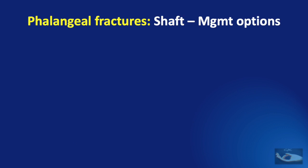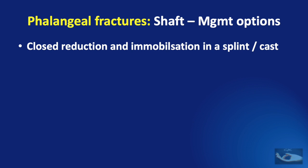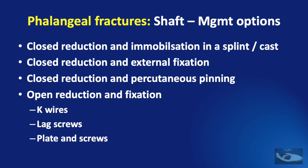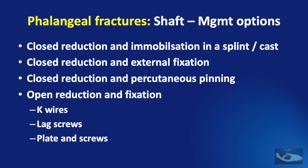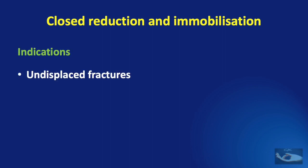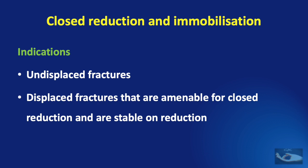We shall see the options available for management of fractures of the shaft of the phalanges. The first is closed reduction and immobilization in a splint or cast, or it could be closed reduction and external fixation, or closed reduction and percutaneous pinning. The other options are open reduction and fixation with K-wires, lag screws, or plate and screws. Closed reduction and immobilization is indicated for undisplaced fractures of the shaft of the proximal or middle phalanx, or displaced fractures amenable to closed reduction that are stable on reduction. A check X-ray will help decide.